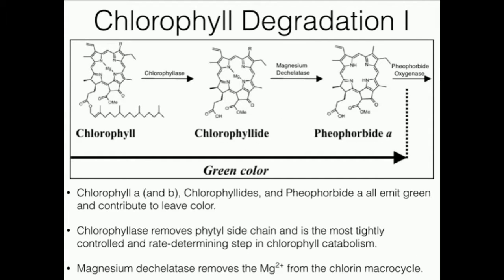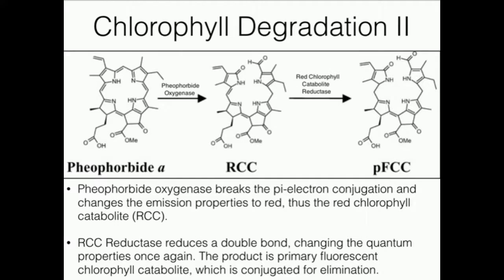After we de-chelate chlorophyllide A, we get pheophorbide A, and pheophorbide A is going to be oxygenated — it's going to react with pheophorbide oxygenase, which first breaks apart the ring. Pheophorbide A is green and contributes to the plant's leaf color because of its conjugated double bonds. However, when we break open this ring, it breaks that conjugation, changing the emission from green to red, giving us RCC — red chlorophyll catabolite.